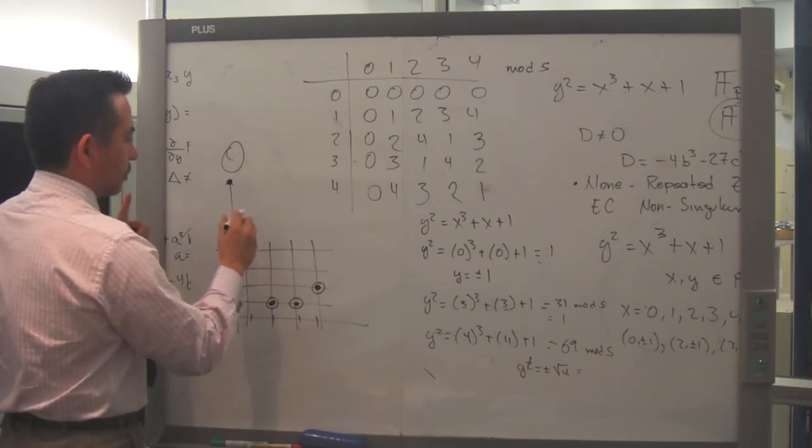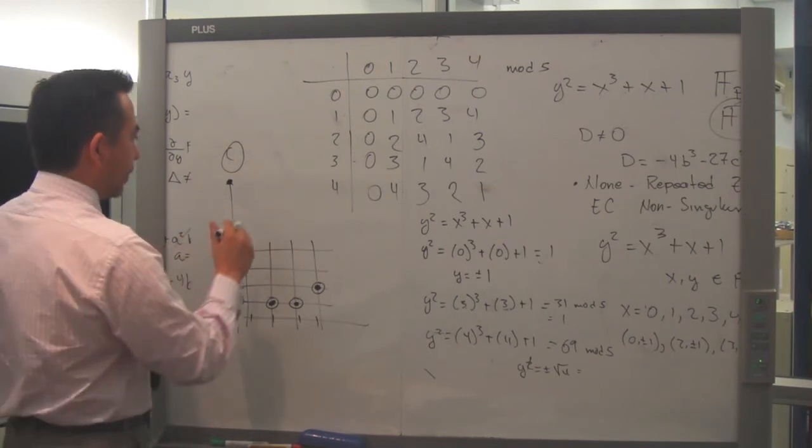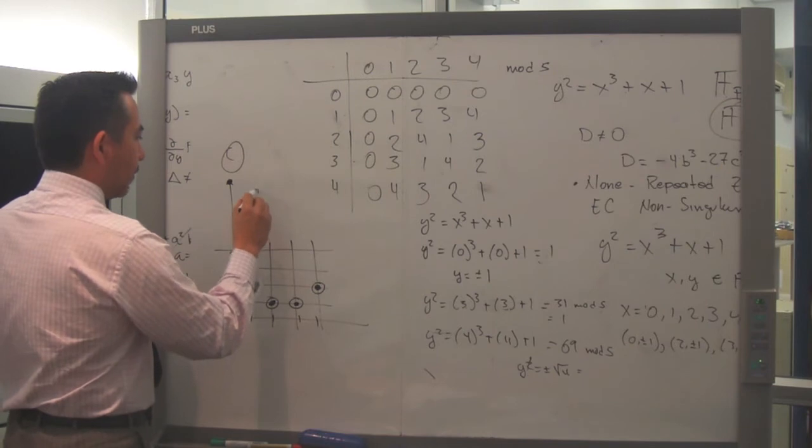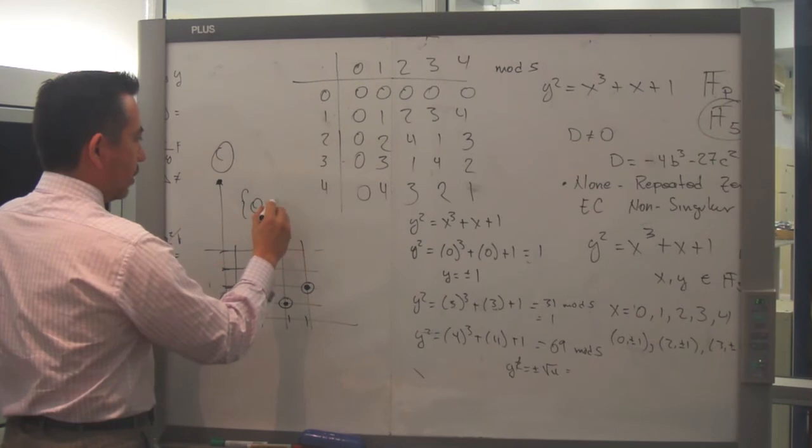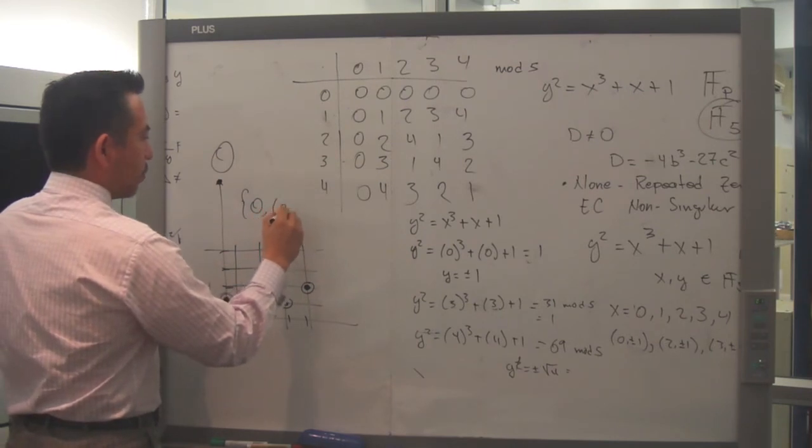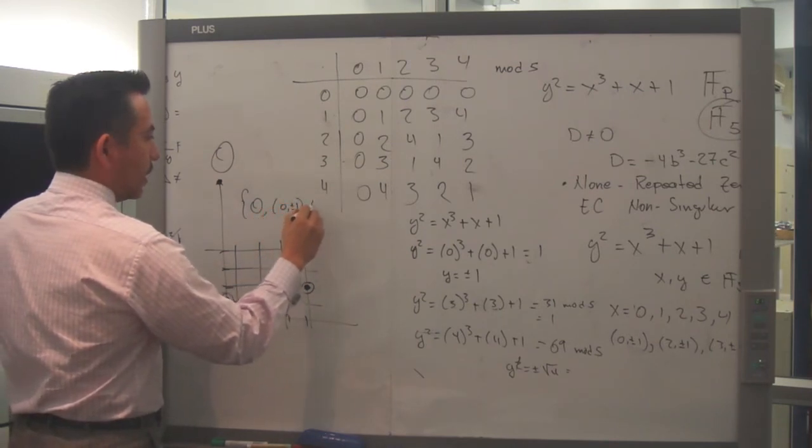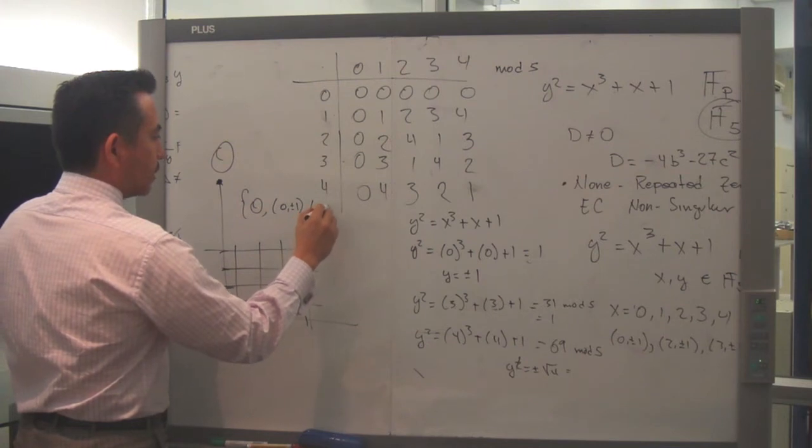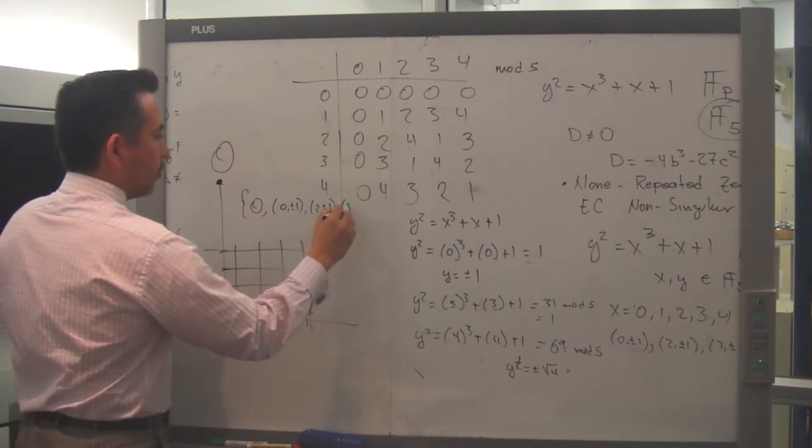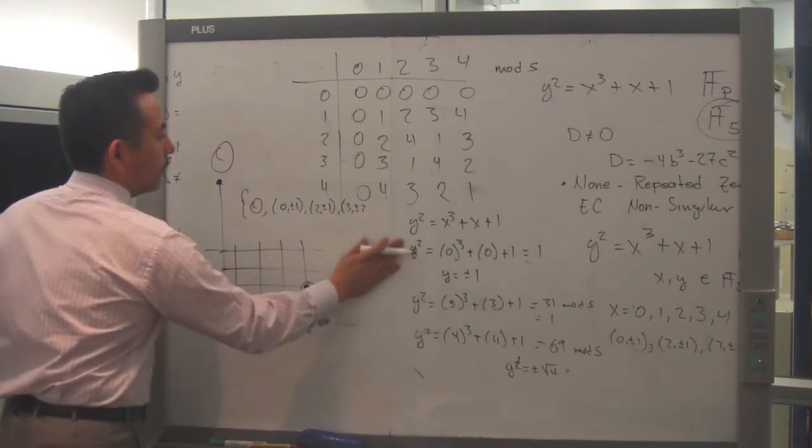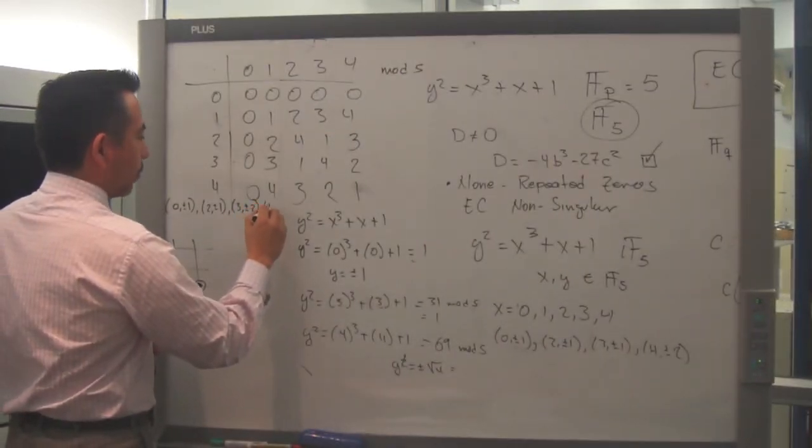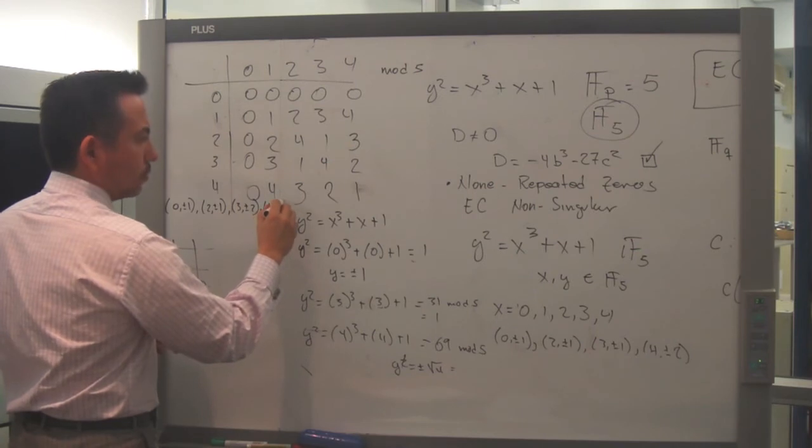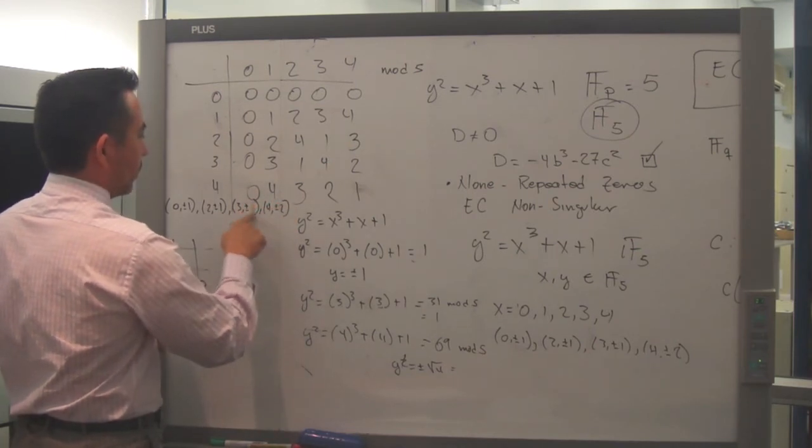It's my solutions. The solutions of this will be point at infinity, then 0 comma plus minus 1, then 2 comma plus minus 1, then 3 comma plus minus 1, then 3 comma plus minus 2, and then 4 comma plus minus 2, 3 comma 1, right?